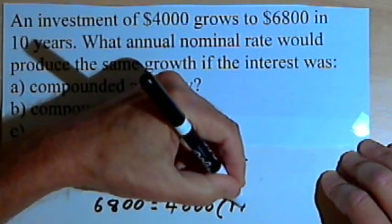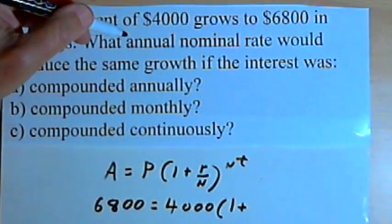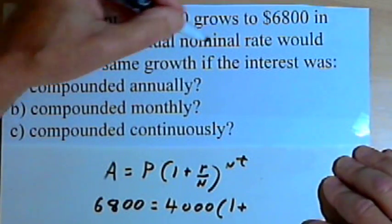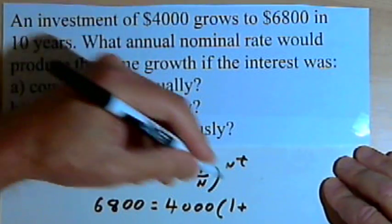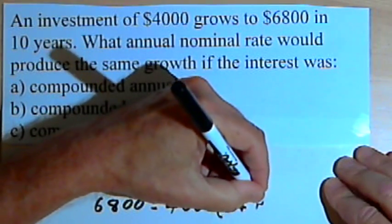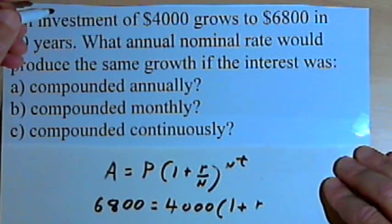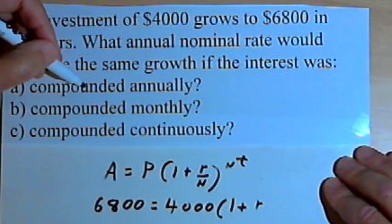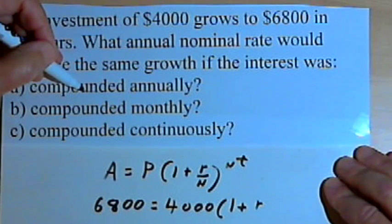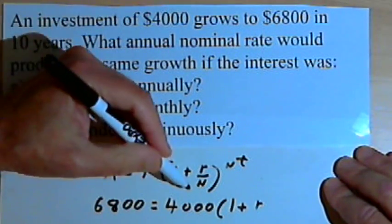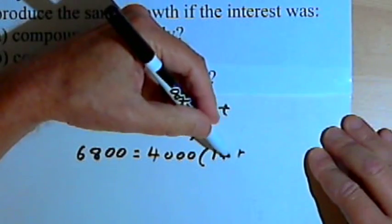Then we've got 1 plus r over n. r is the interest rate. We don't know that, so we'll use an r. And n is the number of compounding periods a year. Well, if it's compounded annually, there's only one compounding period each year. So n would be 1, so we'll just leave this as 1 plus r.